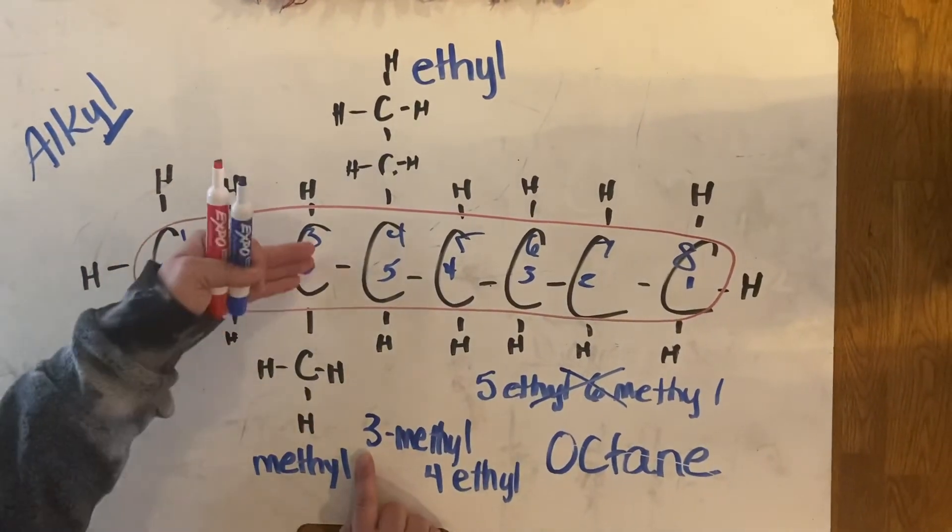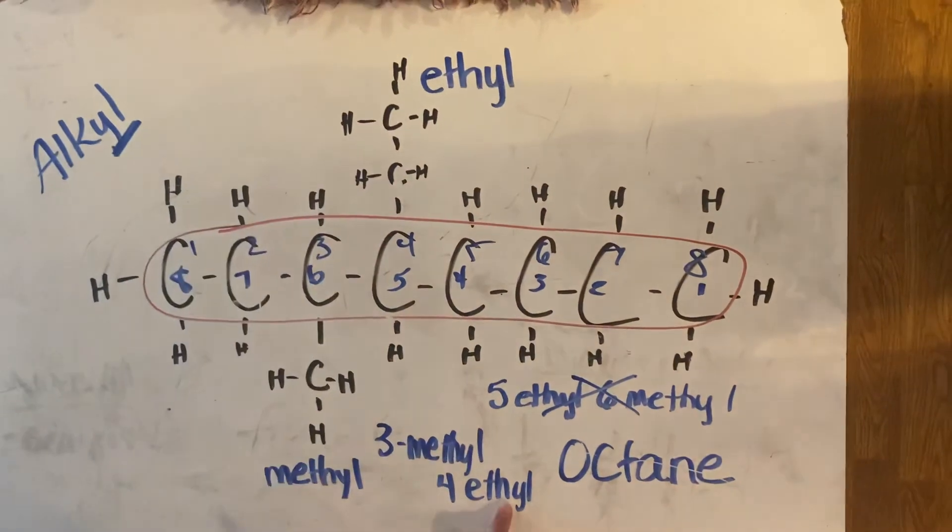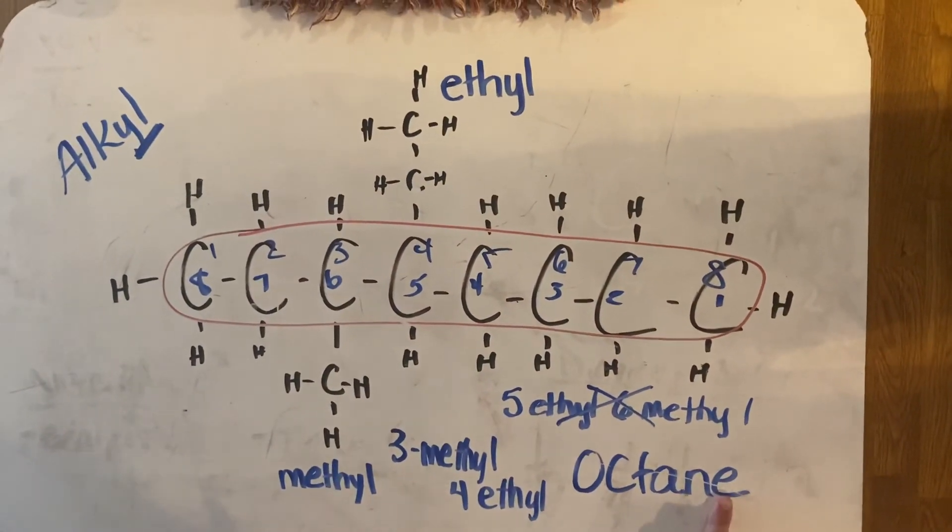Three and four are smaller than five and six. So off the third carbon, I have a methyl group. Off the fourth carbon, I have an ethyl group, and the whole name of the compound is 3-methyl-4-ethyloctane.